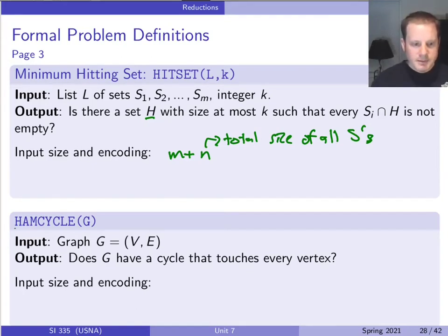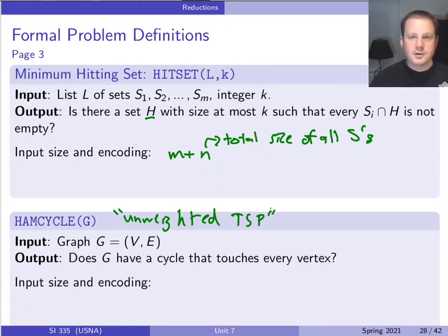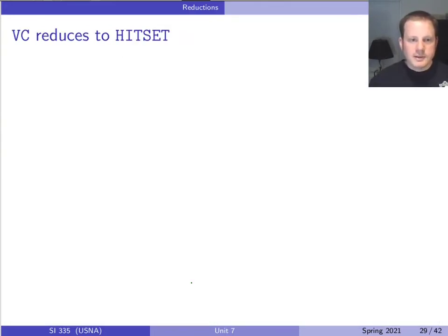The Ham Cycle problem — really Hamiltonian Cycle — is kind of like an unweighted Traveling Salesman Problem. It asks: is there a way to cycle through all the nodes of a graph without repeating anything? The input size is just the size of the graph, which is at most n² if we use an adjacency matrix.